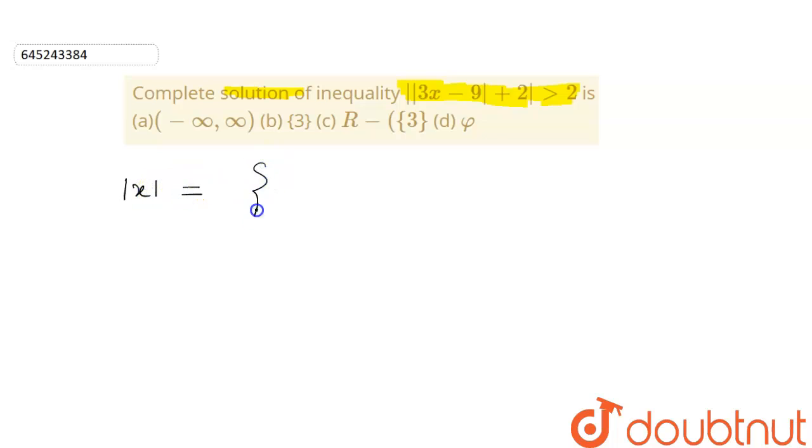So we know that if we have |x|, it opens up as -x when x is less than 0 and as +x when x is greater than 0.